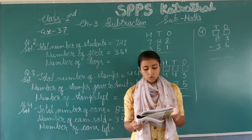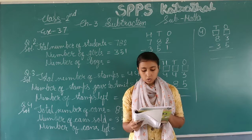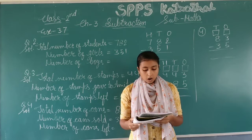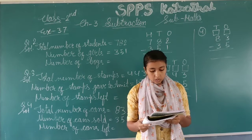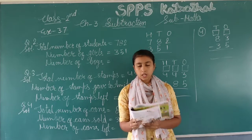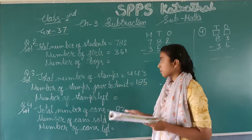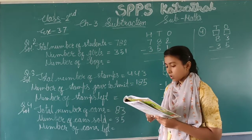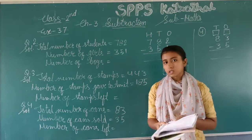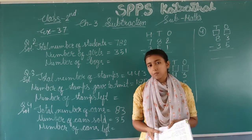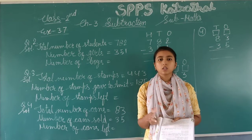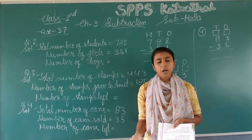Meaning there were 782 students total. How many boys were there in the school? We have been given the number of girls, and we need to find how many boys there are. We can solve it using the total number of students minus the number of girls to get the number of boys.